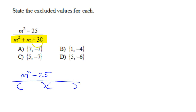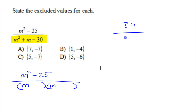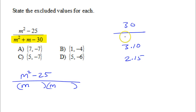Factoring the denominator. I've got m squared, which is m times m, and 30. 30 is either going to be 3 times 10, or 2 times 15, or 5 times 6. Let's go with 5 times 6 — looking at the middle term of 1, 5 times 6 is looking pretty good.